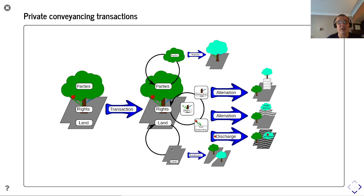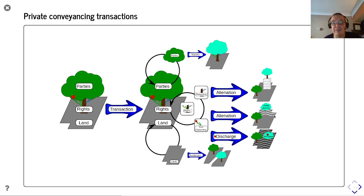We can see this in terms of the LADM model. We can have a transaction that represents a party transfer — selling or transferring ownership — or a land transfer where we're subdividing the land, or a rights transfer or rights alienation, alienating sub-ownership from the primary land to create flats or alienating road access from the bundle of rights so a neighbour can have an easement and a right of access over your land.